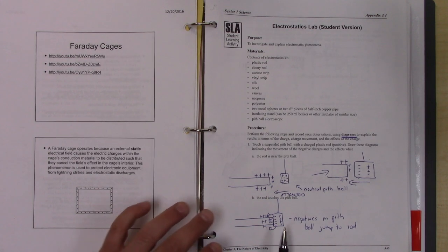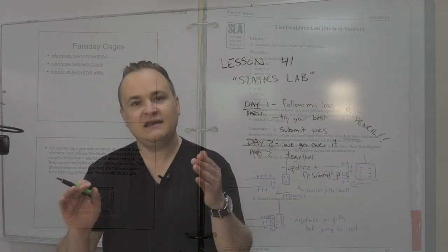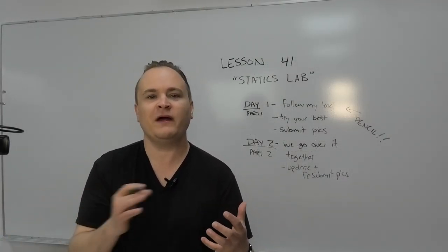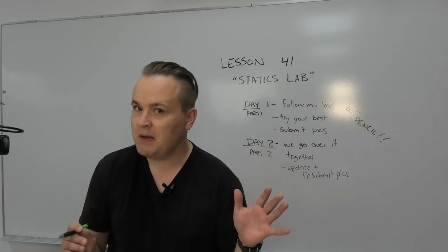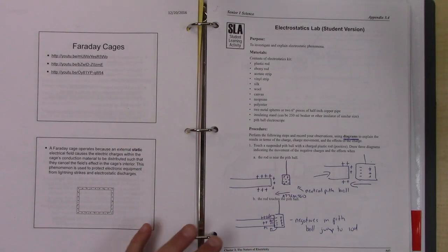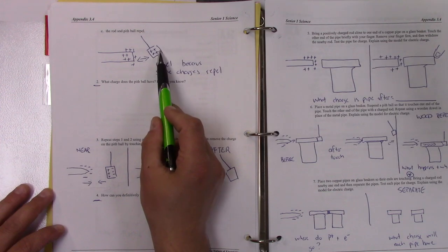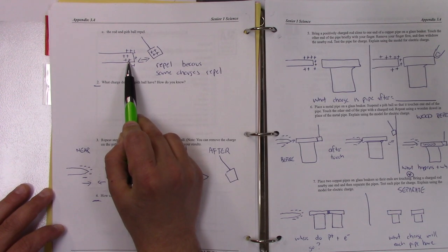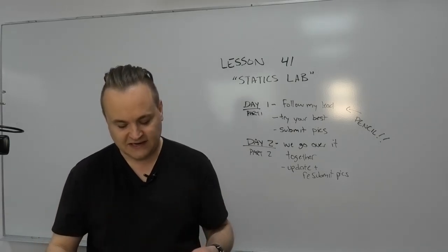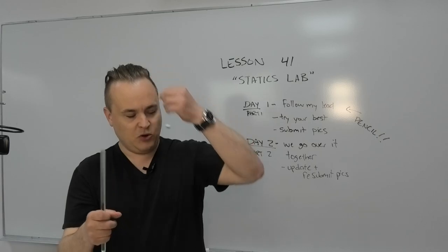The second they touch, all those negatives jump — negatives are allowed to leave. They go right off the pitfall into the rod. The rod is so positive it doesn't even change, but now all the negatives are gone from the pitfall. You end up with an incredibly positive pitfall and an incredibly positive rod, and like charges repel.